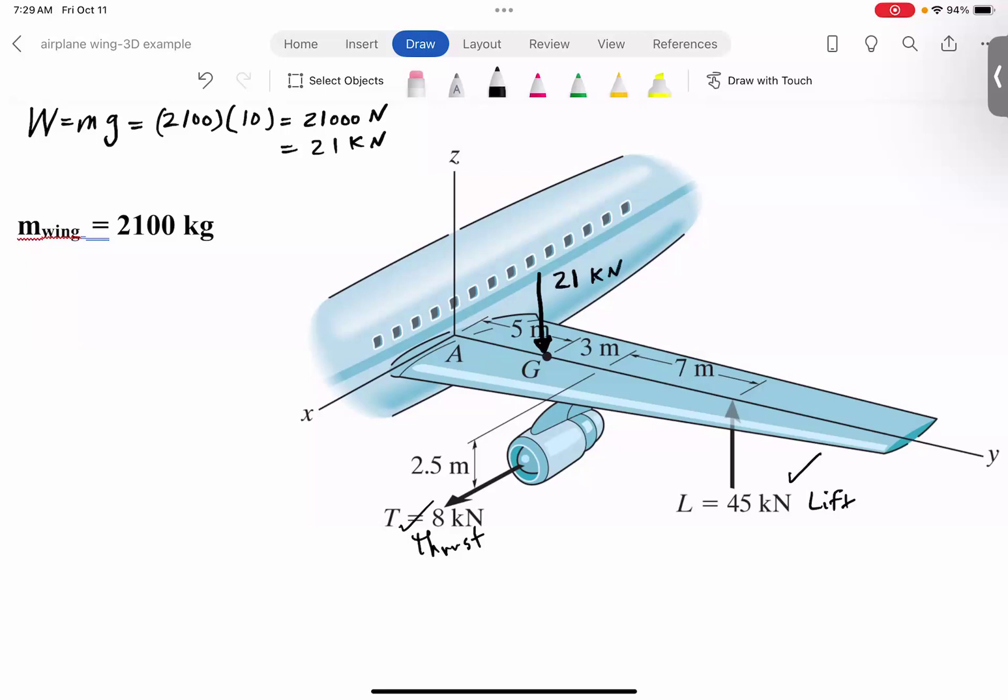Now, what are we trying to determine? As you can see, the wing of the airplane is attached to the fuselage here, and we model that as a fixed type of support. You know that when you have a fixed type of support, two-dimensional, you get three reactions, one in X, one in Y, and one moment reaction. Here is a three-dimensional situation.